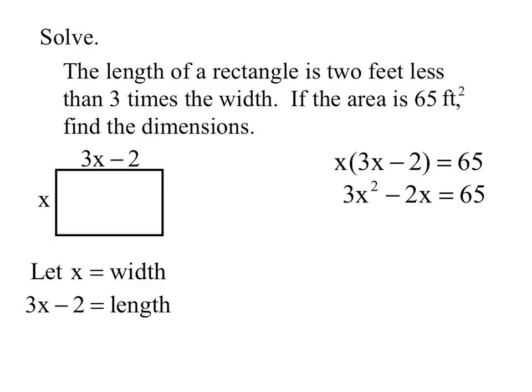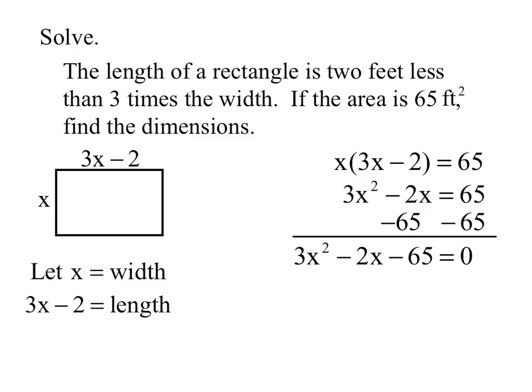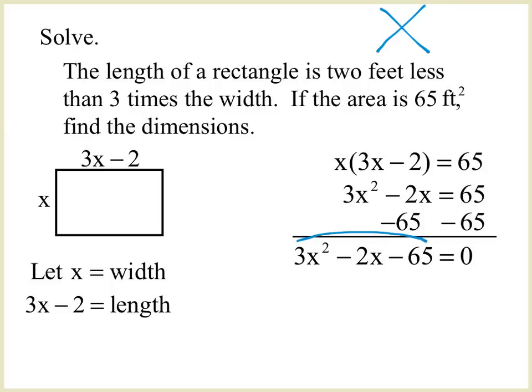Next I'm going to set it equal to zero, so I'll subtract 65 from both sides, and I'm left with 3X squared minus 2X minus 65 equals zero. When we have a leading coefficient, I'm going to do my X marks a spot: multiply the first and last terms to get negative 195. What adds to negative 2? Now remember, that's two digits apart.